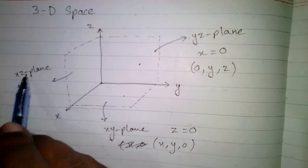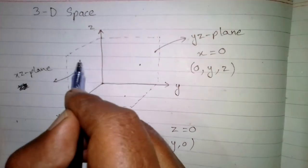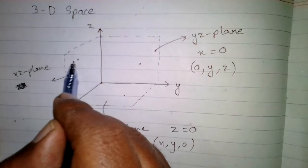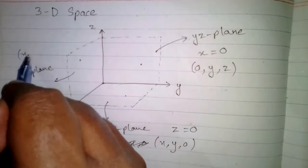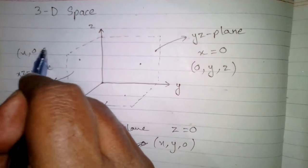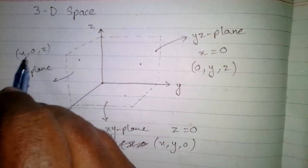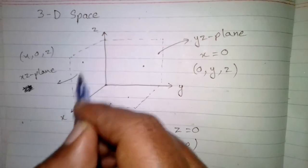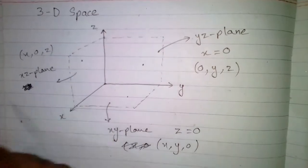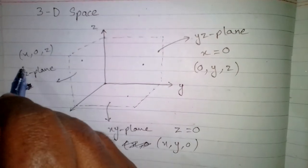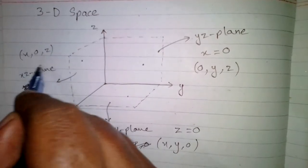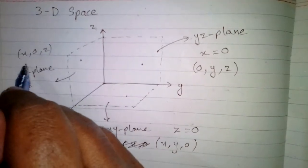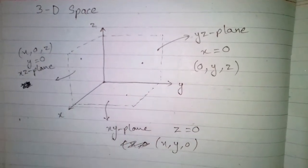Similarly, on the XZ plane, if we take any point, this point is of the form (x, 0, z), and the value of Y on the XZ plane is always zero. So the equation of the XZ plane is Y equals zero.